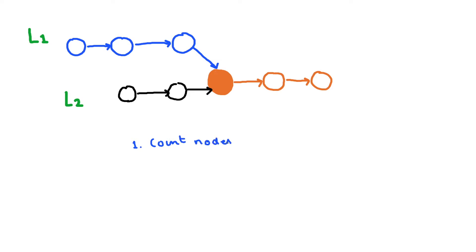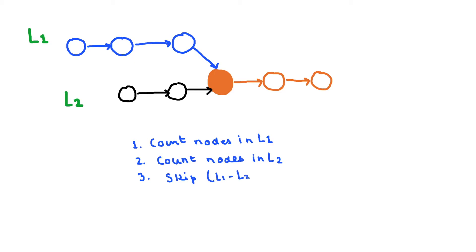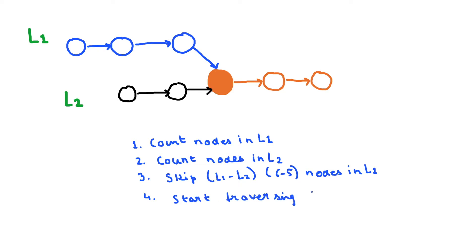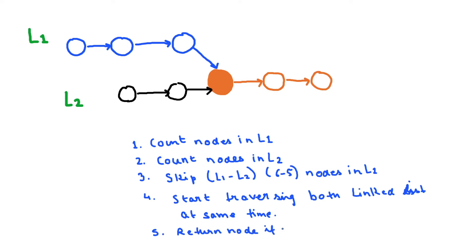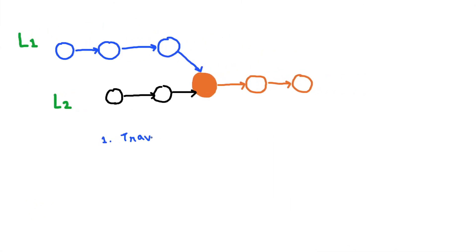A better solution is to count the number of nodes in linked list one and similarly count the number of nodes in linked list two. We subtract those counts and skip that many nodes from the larger linked list — in this case linked list one, so we skip one node. The benefit is that we can then start traversing both linked lists at the same time, checking whether each pair of nodes is equal. If they are equal, both linked lists are intersecting and we can return that particular intersecting node.